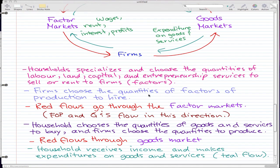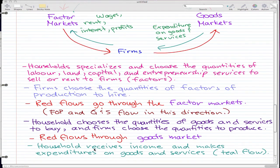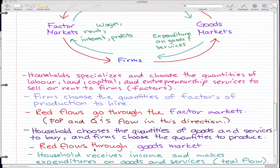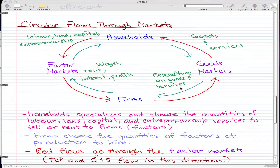Now, household receives income and make expenditures on goods and services, and this is represented by the teal flow that we have here. So then the households will go through the goods markets, and then they will spend on the goods and services. And when they spend, the firm gets money.